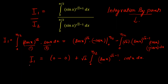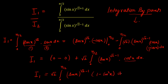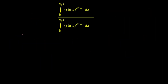Now we'll further simplify to get the relationship between I1 and I2. So I1 = √2 times the integral from 0 to π/2 of sin(x)^(√2−1) · cos²(x) dx. I'm going to write cos²(x) as (1 − sin²(x)) dx, and solve this integral on the next page.